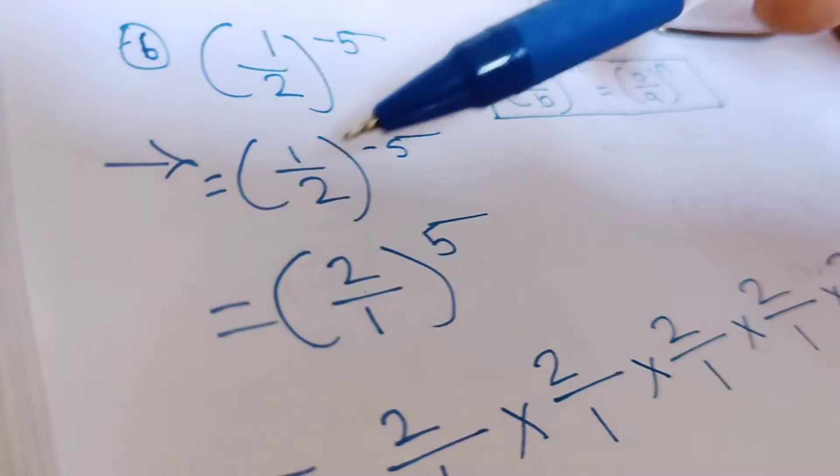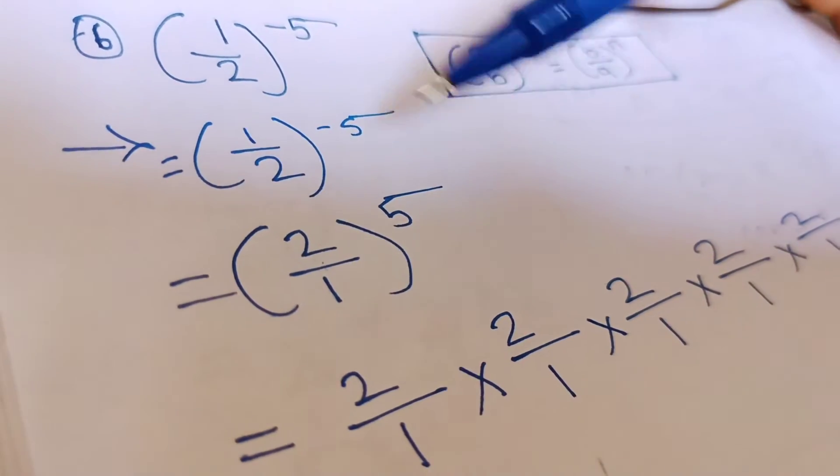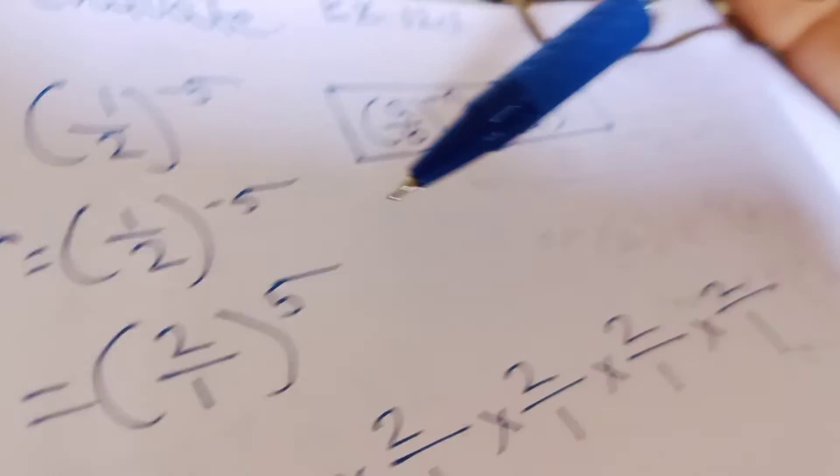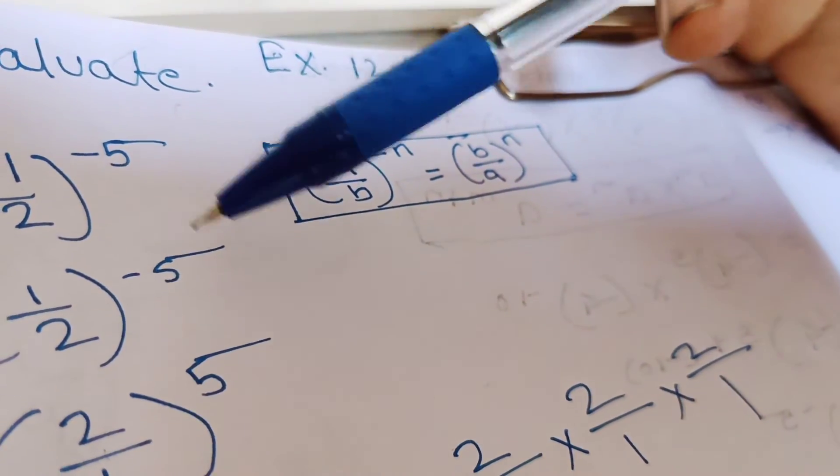So now equal to 1 upon 2 minus 5 equal to 2 upon 1 positive 5. So we use this identity to convert the negative 5 to positive.